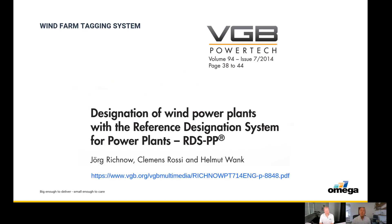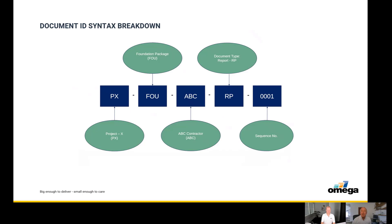When setting up a new project, where do you start the document control process? With any project at the start, it's extremely important to cement reference terminology to the key metadata, as failing to do this will make it difficult — if not impossible — to change once established. The coding definition of the project name and package contractors with identifying abbreviations, along with a listing of document codes, are the main metadata requirements to form the document identification syntax. Most clients and contractors are looking to keep their document coding as short as possible, but shaving down key data beyond these essential principles can lead to problems in defining and locating documentation through filtering later in the project.